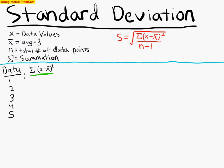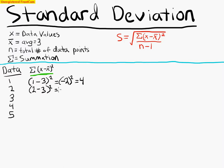Let me change colors here. So what we're doing is we're taking the data value 1 minus the average, which is 3, and we are squaring that. So that would be negative 2 squared, and that value turns out to be 4. We repeat this process: 3 minus the average, negative 1 squared, which equals 1.